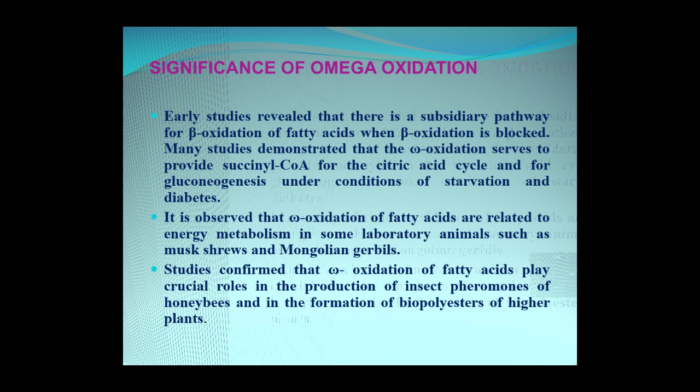Significance of omega oxidation: Earlier studies revealed that omega oxidation is a subsidiary pathway for beta oxidation of fatty acid when beta oxidation is blocked. Many studies demonstrated that omega oxidation provides succinyl coenzyme A for the citric acid cycle and for gluconeogenesis under conditions of starvation and diabetes. It is observed that omega oxidation of fatty acids is related to energy metabolism in some laboratory animals such as musk shrews and Mongolian gerbils. Studies confirm that omega oxidation of fatty acids plays a crucial role in the production of insect pheromones of honeybees and in the formation of biopolyesters of higher plants.